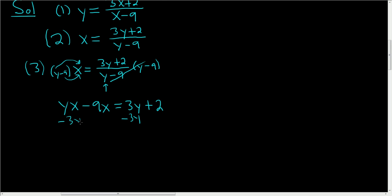So I'll write it over here. Those are gone. And then we'll add the 9x. Those are gone. So we have yx minus 3y equals 2 plus 9x.